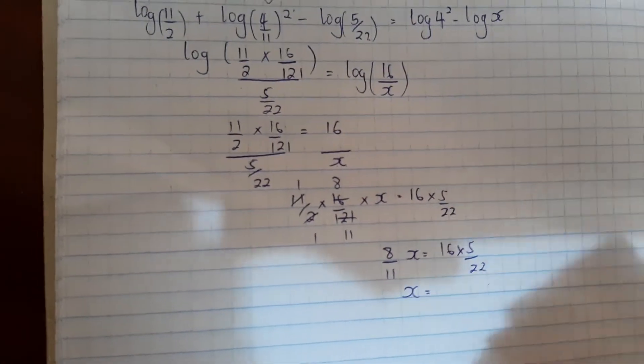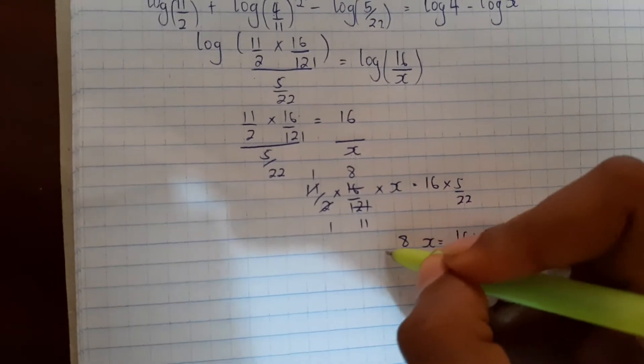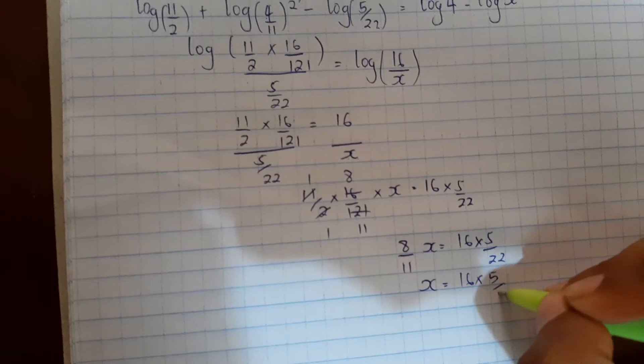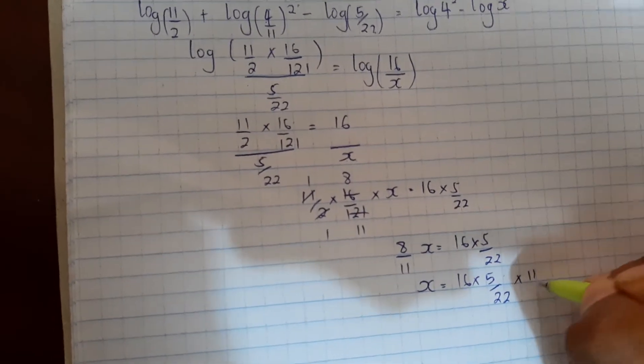So x equals, this becomes reciprocal, so multiply by 11/8. So 16 times 5 over 22 times 11/8.